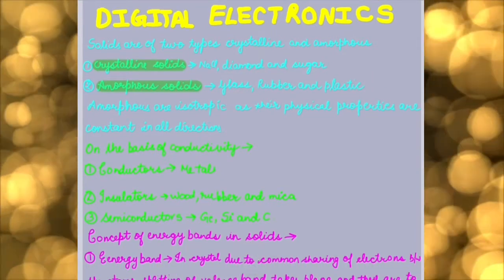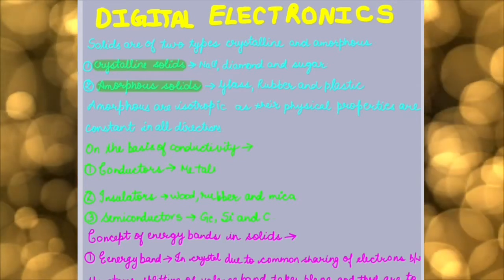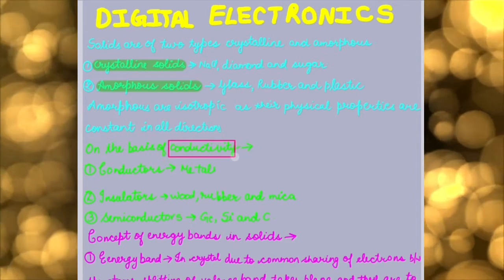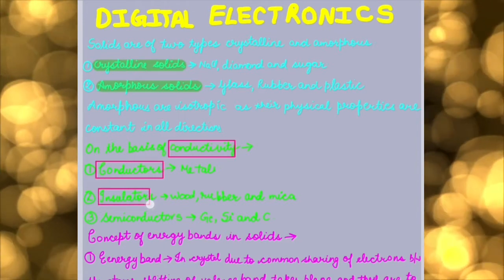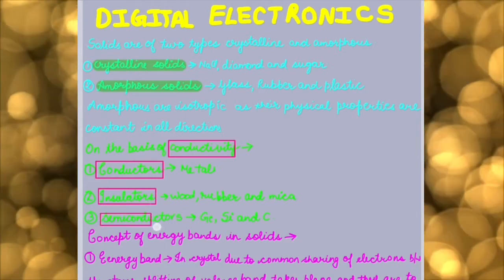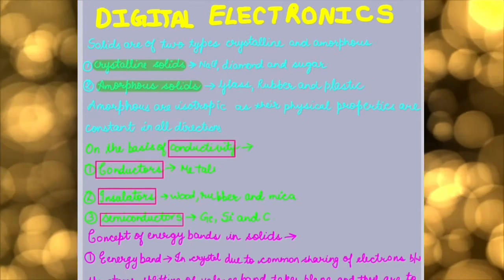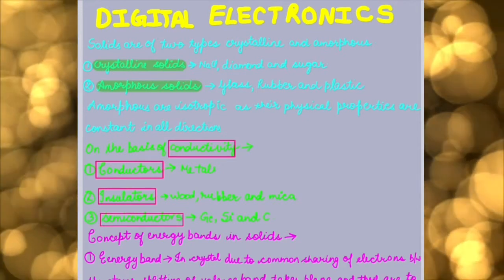Now on the basis of conductivity, we have another category on the basis of conductivity. First is conductors, second is insulators, and third one is semiconductors. Now what are these three? So first let us talk about conductors, which can conduct electricity, have free ions like all the metals.